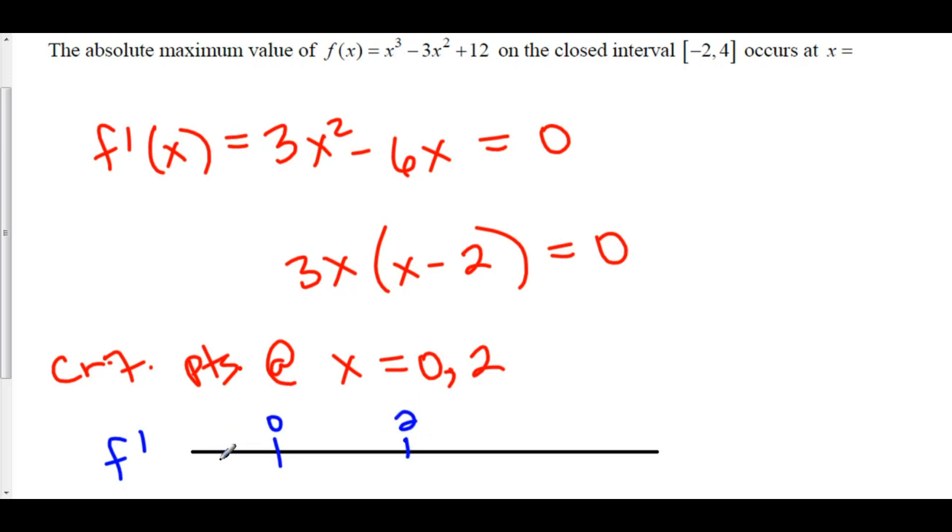Let's look to the left of 0, like for example, negative 1. Negative times a negative is a positive. Let's check in between 0 and 2, like for example, 1. Positive times a negative is a negative. And let's check to the right of 2, how about 3? Positive times a positive is a positive.